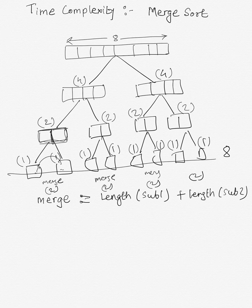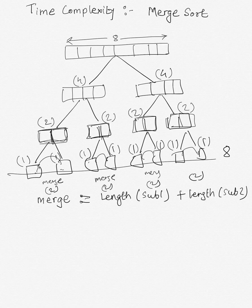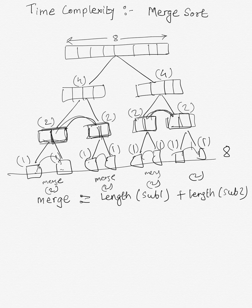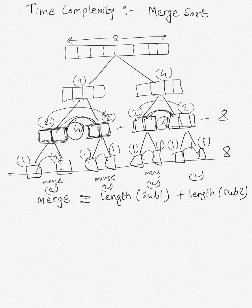Once the merge happens, each sub-array is now sorted. The next step is to merge these sorted sub-arrays at the next level. The length of each sub-array is 2, so in the worst case the merge operation takes 2 plus 2 equals 4 operations. We have two such merges, so 4 plus 4 equals 8 operations at this level as well.